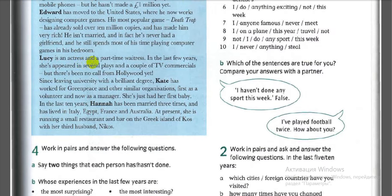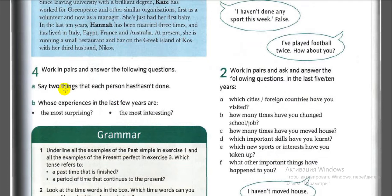Lucy is an actress and part-time waitress. In the last few years she's appeared in several plays and a couple of TV commercials, but there has been no call from Hollywood yet. Since leaving university with a brilliant degree, Kate has worked for Greenpeace and similar organizations, first as a volunteer and now as a manager. She has just had her first baby. In the last ten years, Hannah has been married three times and has lived in Italy, Egypt, France, and Australia. She's currently running a small restaurant and bar on a Greek island with her third husband, Nikos.